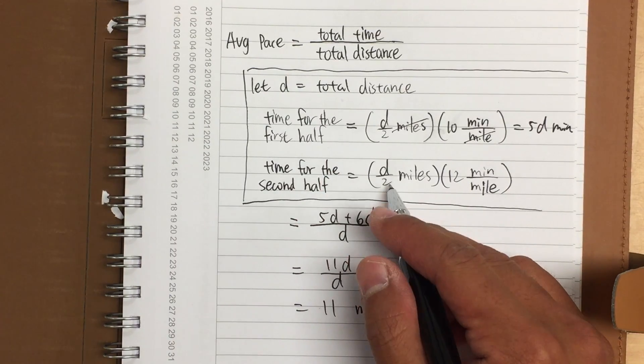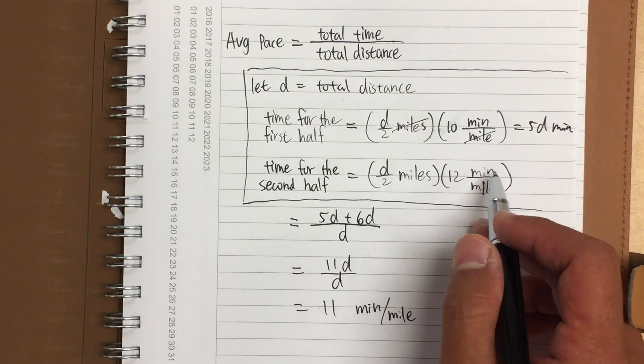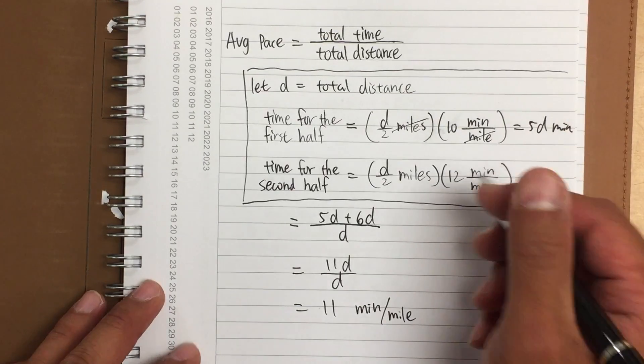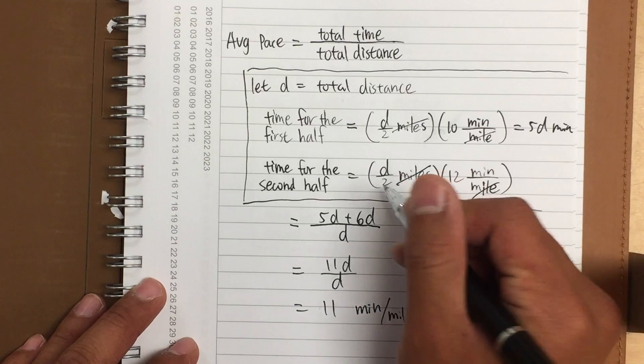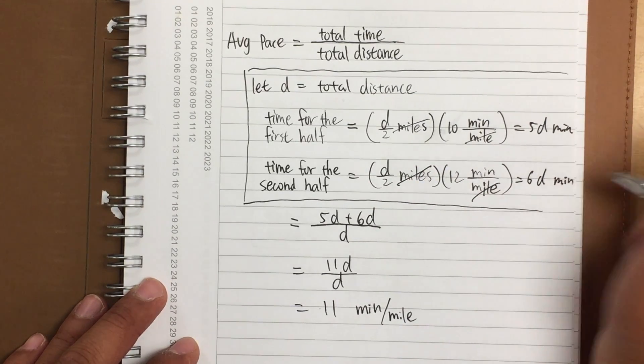And likewise, for the second half, it will just be d over 2 times 12, because I told you guys in the video, 12 minutes per mile for the second half of the marathon. And the mile once again cancel out, d over 2 times 12, this right here is just going to be 6d minutes.